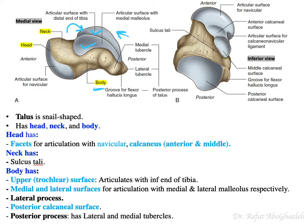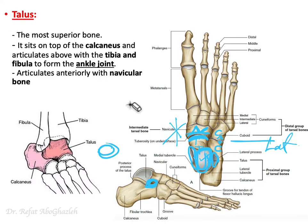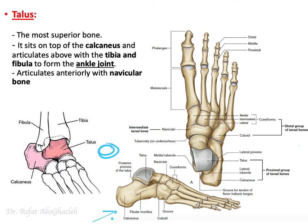On the body, you will also find a lateral process. Looking laterally, this is the lateral process of the talus — clearly visible on the lateral side of the bone.